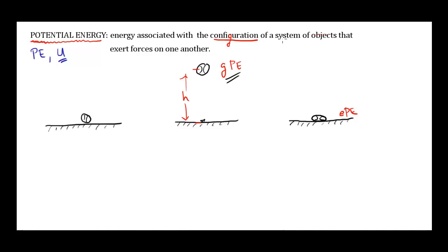So these are two different types of potential energy we're going to discuss, and both relate to the configuration of a system of objects that exert forces on one another. In the case of gravitational potential energy, the objects are the ball and the earth — it's due to the configuration between the ball and the earth that the ball has gravitational potential energy. In the case of elastic potential energy, the configuration is the molecules that make up the ball itself — by compressing the ball, you've changed the relationship of those rubber molecules with respect to each other, and they're now exerting forces on each other.